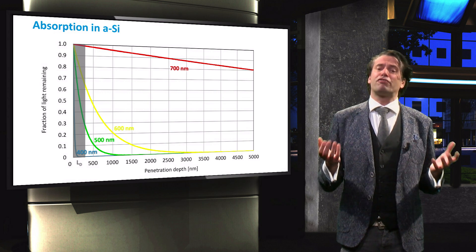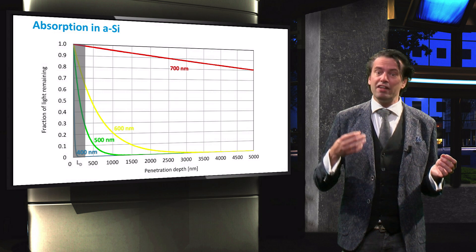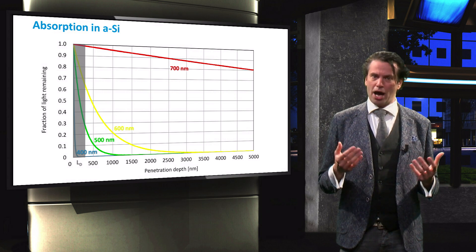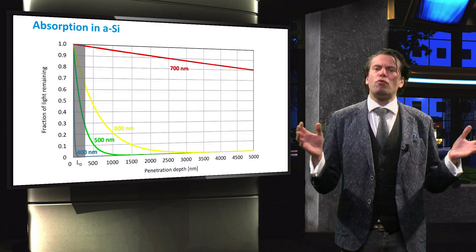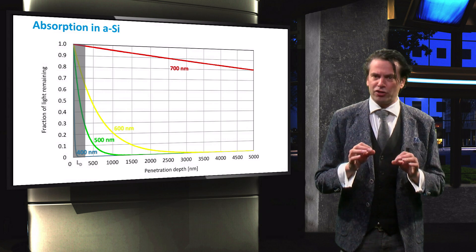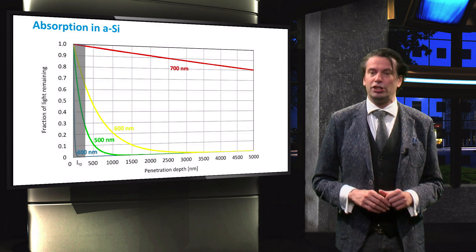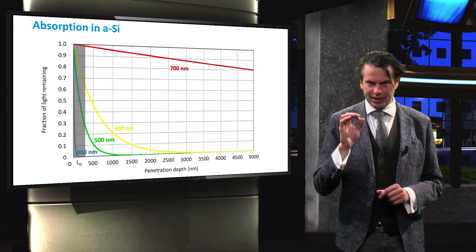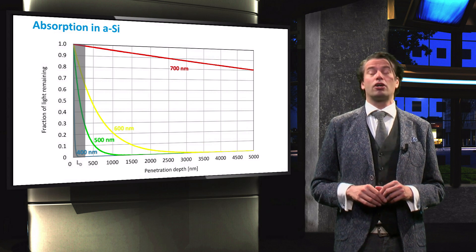At this thickness a large fraction of the yellow, red, and infrared light remains unabsorbed. We therefore want to increase the optical thickness of the absorber without increasing its geometrical thickness. That is where surface texturing comes in.